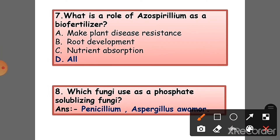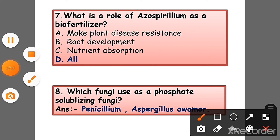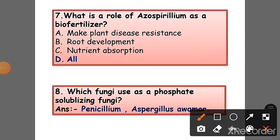Question 7: What is the role of Azospirillum as a biofertilizer? Answer: It makes plants disease-resistant and helps in root development and nutrient absorption.